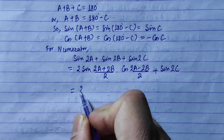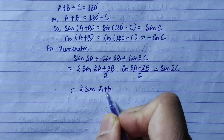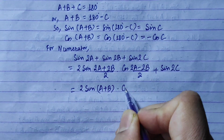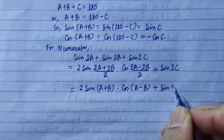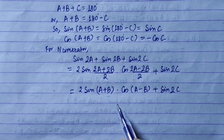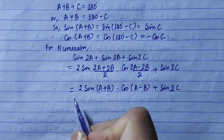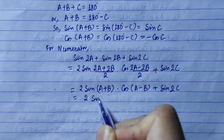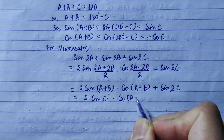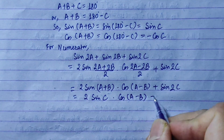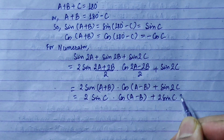We simplify using two formulae. This gives us 2·sin(a+b)·cos(a−b) + sin2c. Now applying the condition: sin(a+b) = sinC. So we get 2·sinC·cos(a−b) + sin2c, and sin2c expands as 2·sinC·cosC.